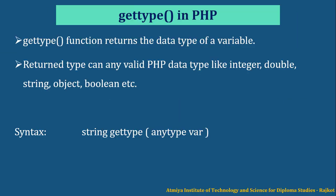These two functions are related to the data type of variables in PHP. The getType function returns the data type of a variable which is passed as the argument. The returned type can be any valid data type like integer, double, string, object, or boolean. The syntax is: string getType(variable), and it returns a string value representing the data type.